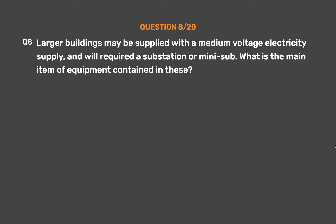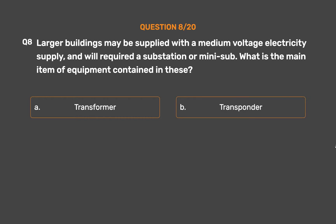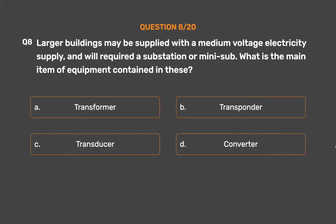Question number 8. Larger buildings may be supplied with a medium voltage electricity supply and will require a substation or mini-sub. What is the main item of equipment contained in these? Option A: Transformer. Option B: Transponder. Option C: Transducer. Option D: Converter.